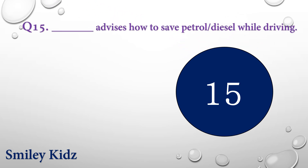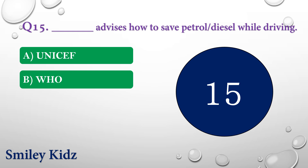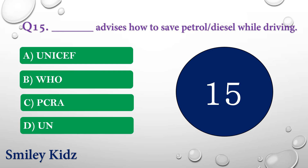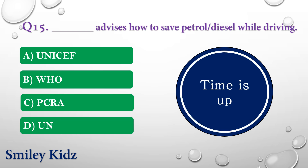Question number fifteen: Dash advises how to save petrol or diesel while driving. The options are: A) UNICEF, B) WHO, C) PCRA, or D) UN. Your time is up and the right answer is option C — PCRA. PCRA advises how to save petrol or diesel while driving.